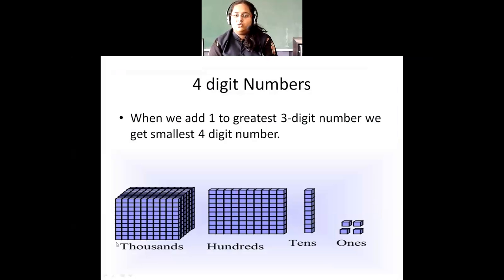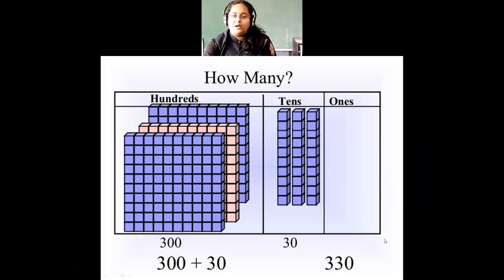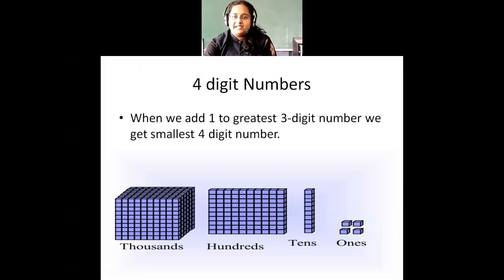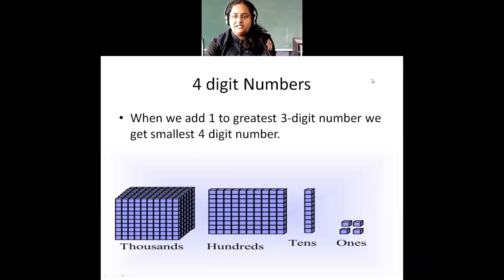Now coming to four-digit numbers — what are four-digit numbers? Before asking that, I want to ask: what is the smallest three-digit number? The smallest three-digit number is 100. And the greatest three-digit number is 999. So when I add 1 to that greatest number 999, I get the smallest four-digit number, which is 1000.